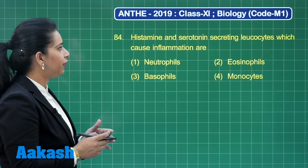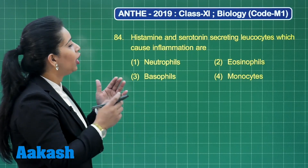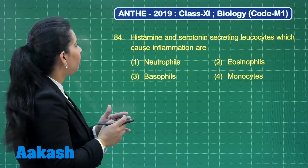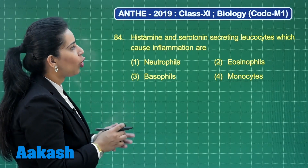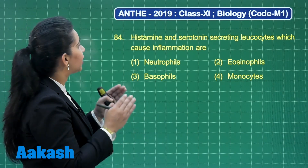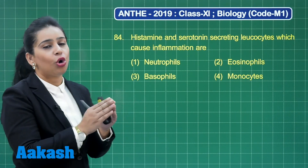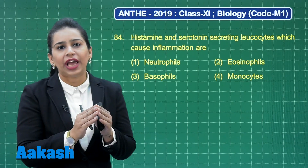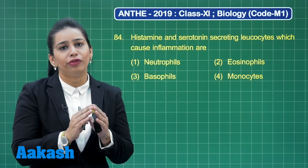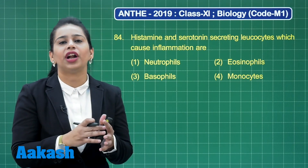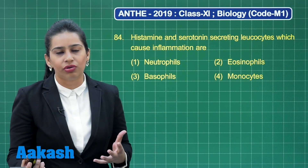Let us move to question number 84, which is from the topic body fluids and circulation. The question asks: histamine, serotonin, and heparin — which leukocytes cause inflammation by secreting these? We have already learnt about the different types of leukocytes. There are 2 major types: granulocytes and agranulocytes.